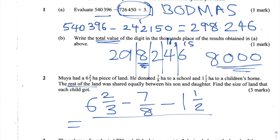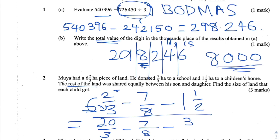To convert mixed fractions to top-heavy fractions, multiply the integer by the denominator and add the numerator, placing the result over the original denominator. So six and two-thirds becomes: 6 times 3 equals 18, plus 2 equals 20, giving 20 over 3. One and a half becomes 3 over 2. So we have 20 over 3, minus 7 over 8, minus 3 over 2. Let's now convert these to equivalent fractions.